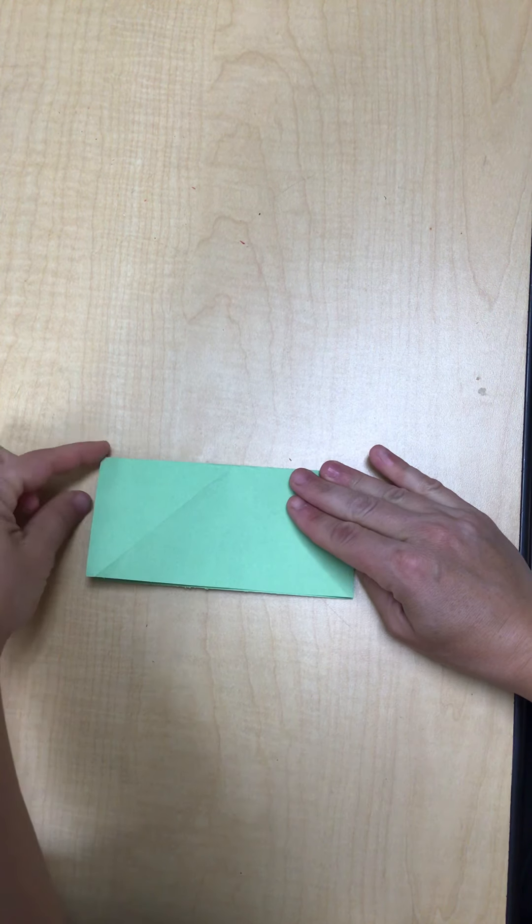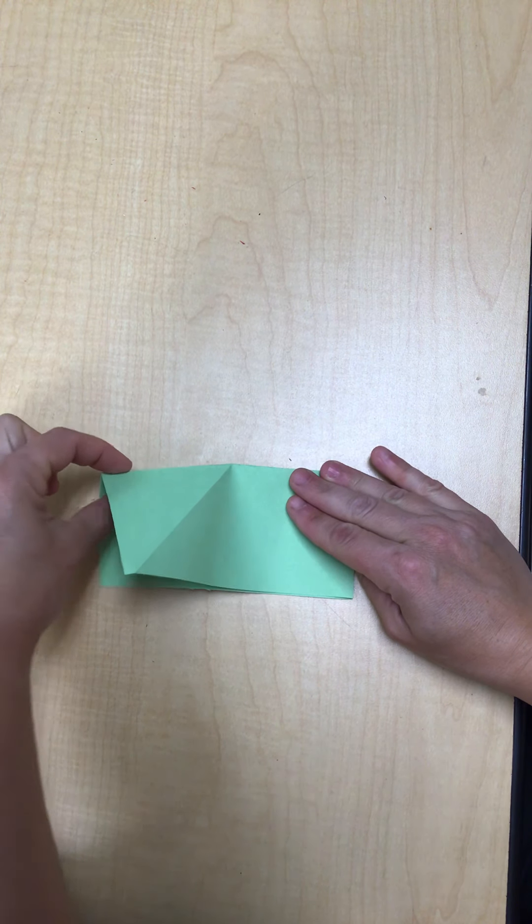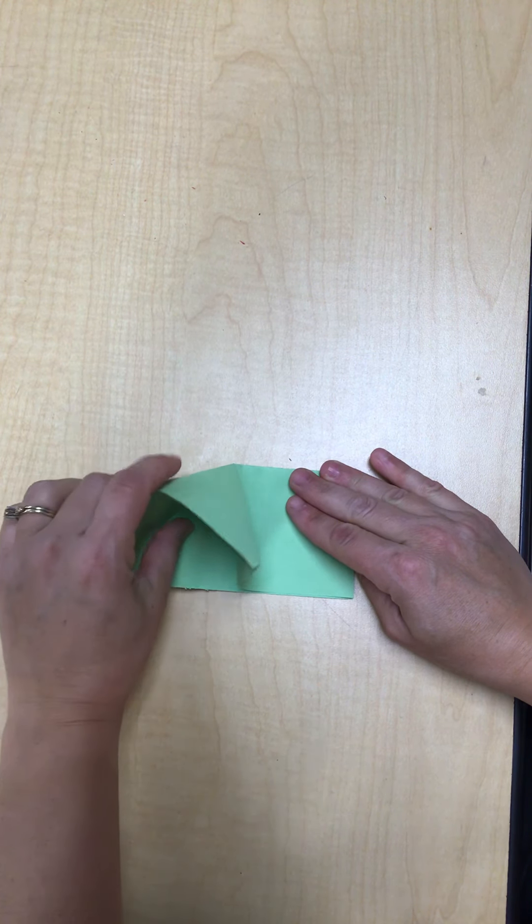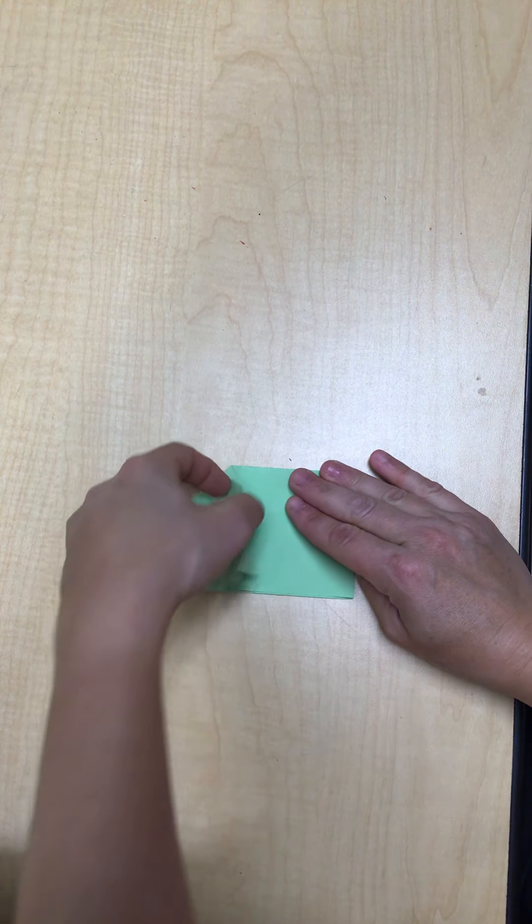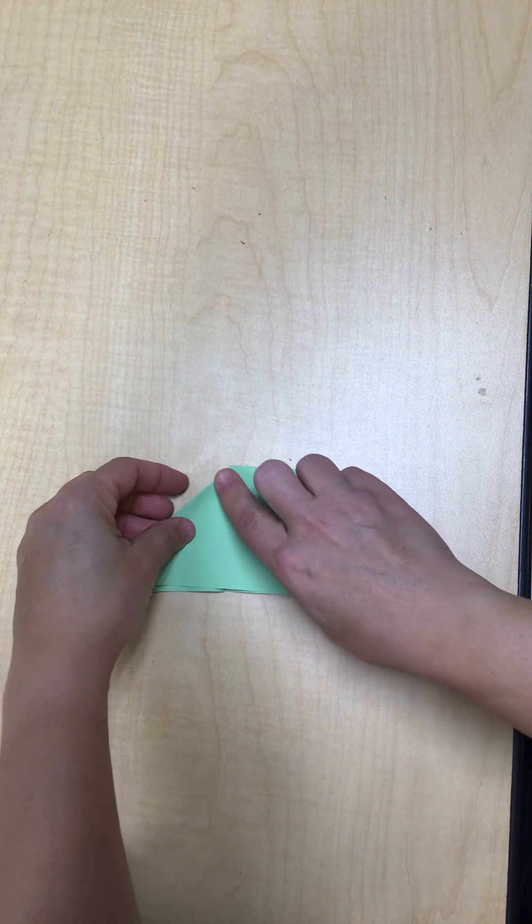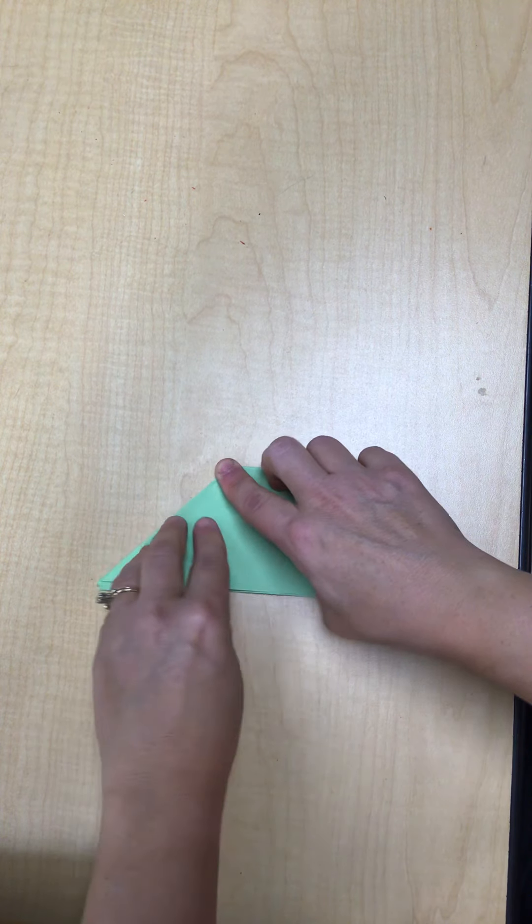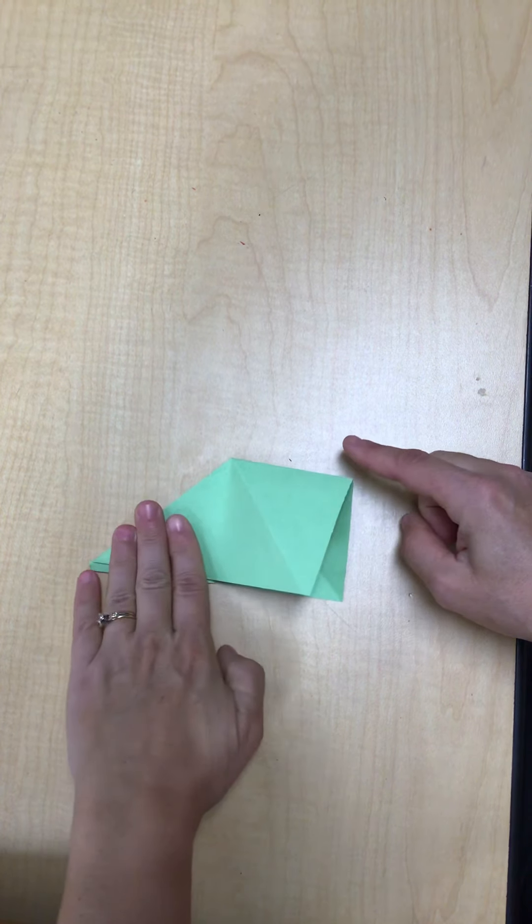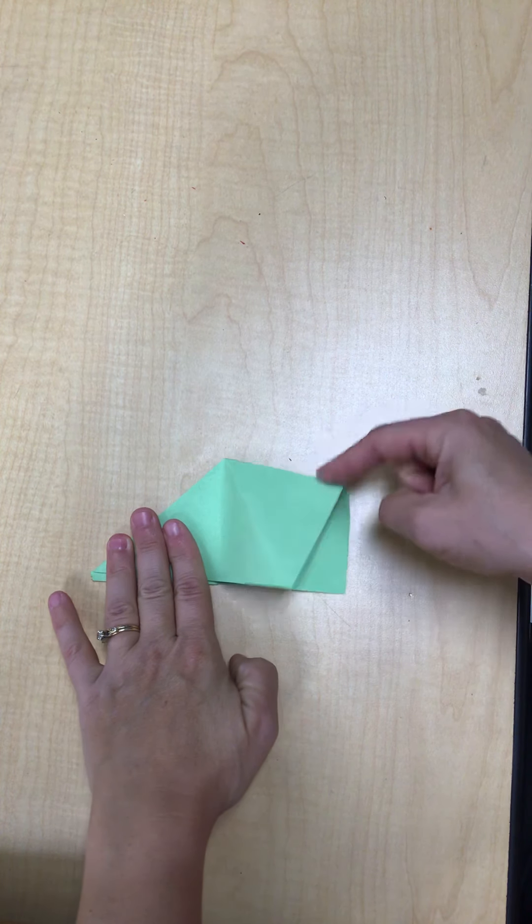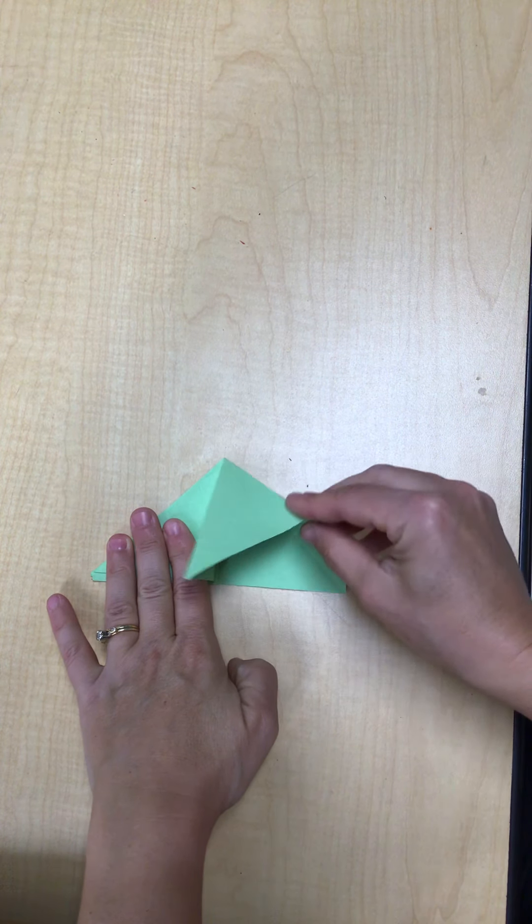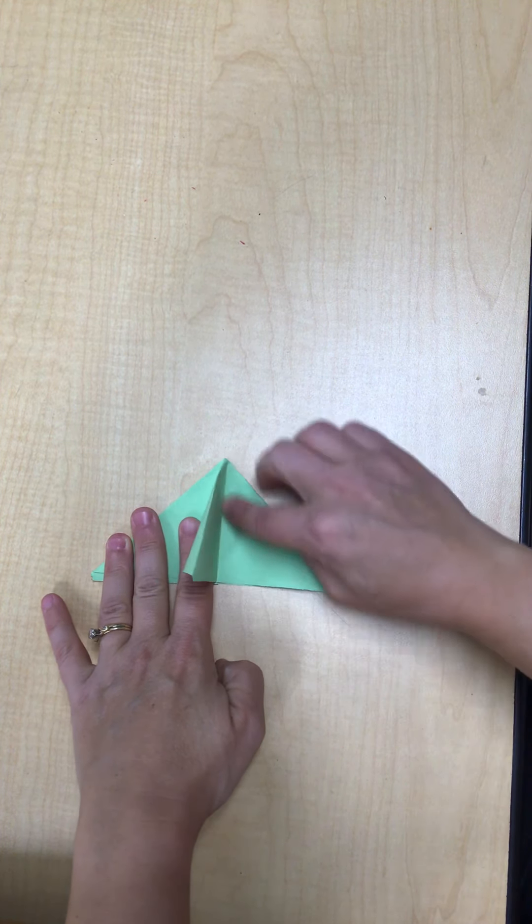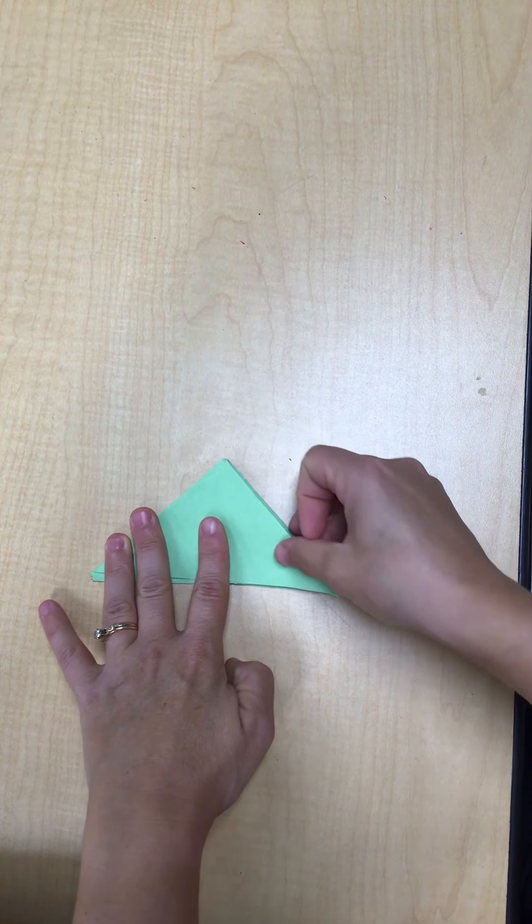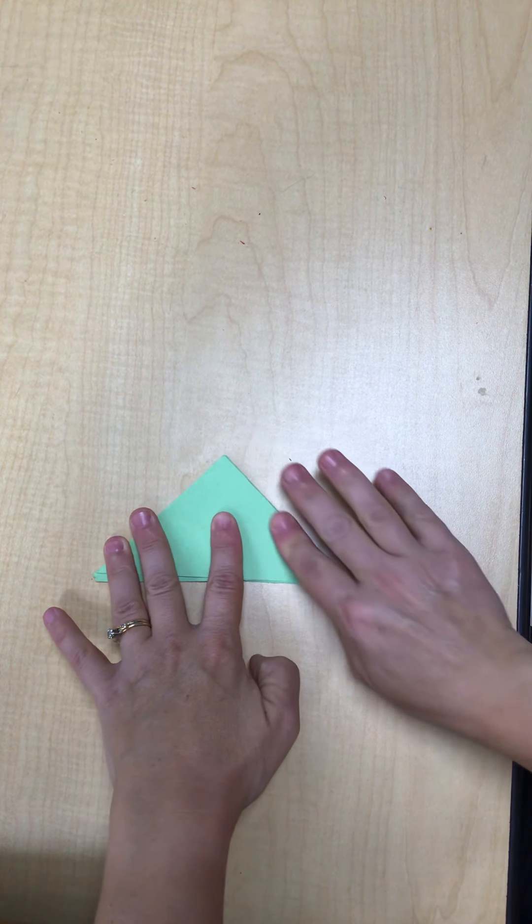Hold down on the paper, push this top edge into the inside and then fold this part down. Do it again on the other side, holding down the paper on the table, push this top edge inside and then fold down this front triangle.